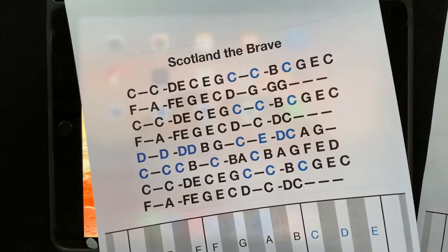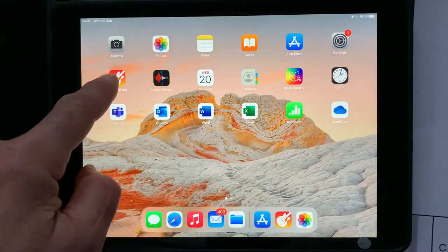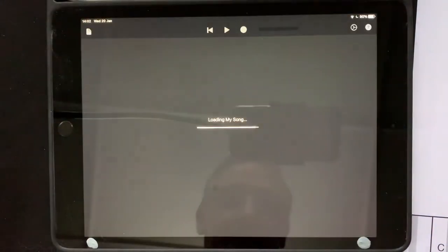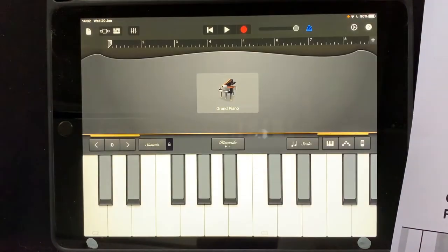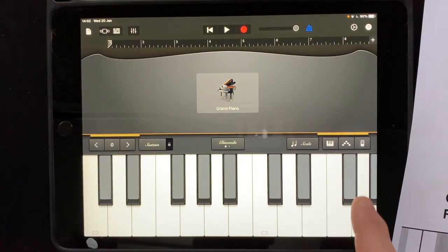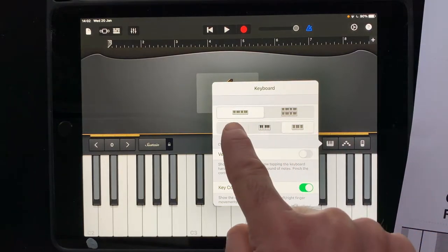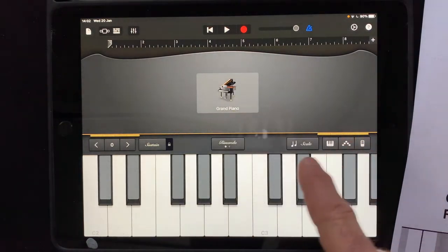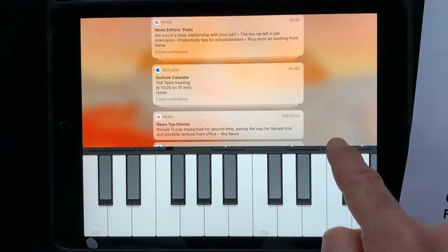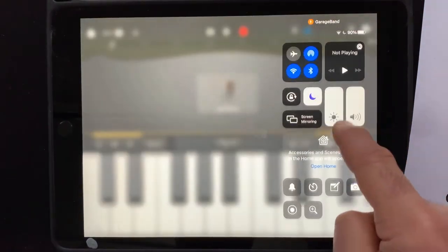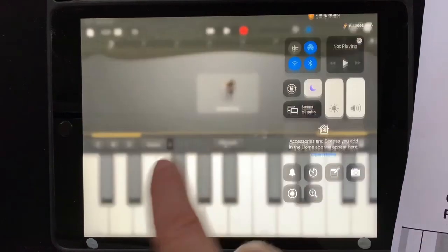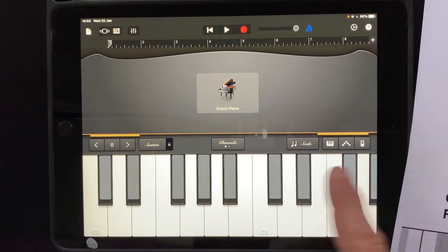And before we start though, we have to make sure we set the app up. So remember, GarageBand keyboard. And first of all, make sure we have the small keyboard. This switch toggles between the different sizes, but we want the smallest one. And our brightness is all the way up, there we are.